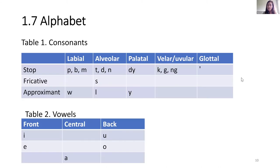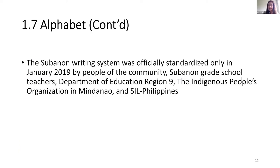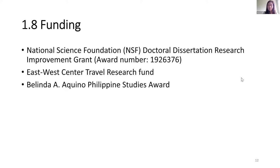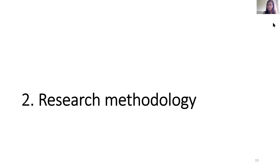Alphabet. Subanon has 15 consonants and 5 vowels. The Subanon writing system was officially standardized only in January 2019 by people of the community, the Subanon Wasteful Futures, the Department of Education Region 9, the Indigenous Peoples Organization in Mindanao, and SIL Philippines. Funding. This dissertation is funded by the National Science Foundation Doctoral Dissertation Research Improvement Grant, the ISQA Center Travel Research Grant, and the Valinda Ayakeno Philippine Studies Award.